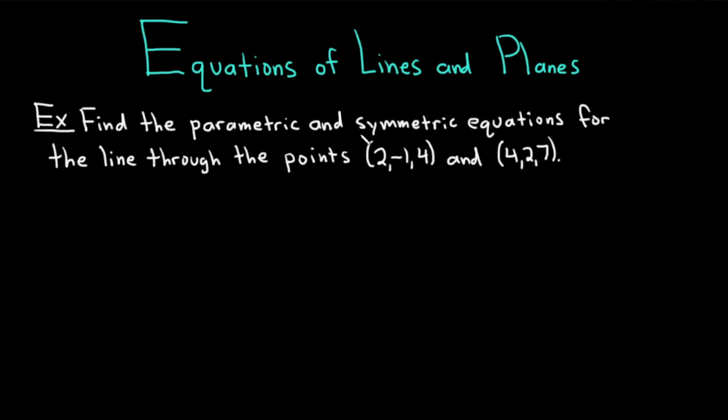Let's start with an example involving a line. Find the parametric and symmetric equations for the line through the points (2, -1, 4) and (4, 2, 7).